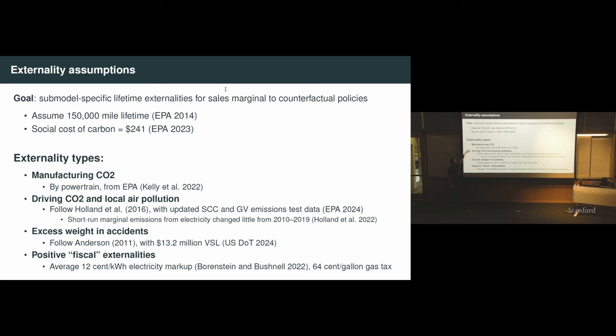Let me start to tell you about calculating the lifetime externalities from different vehicles. As we shift people from buying gas cars to buying electric cars, we want to know how much that's going to improve the environment, how much that's going to reduce the externalities that we impose when we drive cars. We want to put dollar numbers on those things so that we can weigh the externality benefits in dollar units against changes in consumer well-being and corporate profits and government revenues.